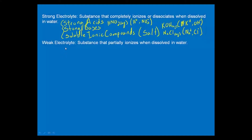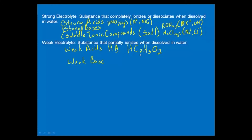How about weak electrolytes? The two types we need to deal with are weak acids and weak bases. Weak acids hopefully you can recognize — they have the form of hydrogen with some anion. If an acid isn't on the list of strong acids you've memorized, then it's weak. Our poster child for weak acids is usually acetic acid, where the anion is acetate and the hydrogen is in front.